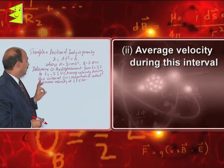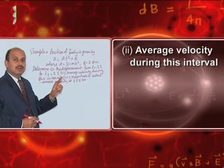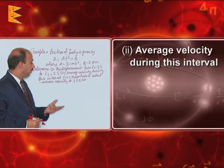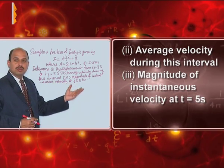Average velocity during this interval, it means t of 3 to 5 seconds interval, what is the average velocity? Then magnitude of instantaneous velocity at t = 5 seconds.